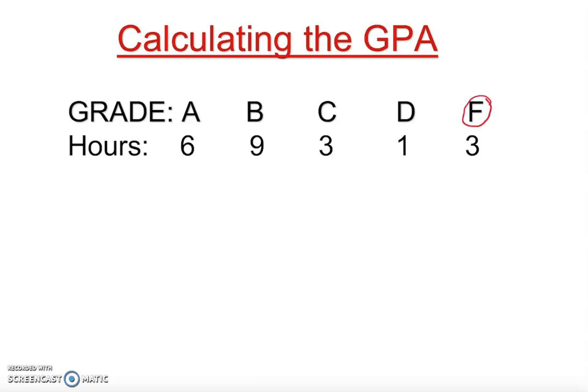So how do you work it out? Let's take a look here. So the points, let's assign the points. In board account we're supposed to assign last person as one, but this time we're going to assign as zero. Why? Because F means you didn't earn any credit, so it's just nothing. One class you fail, so no point is earned.